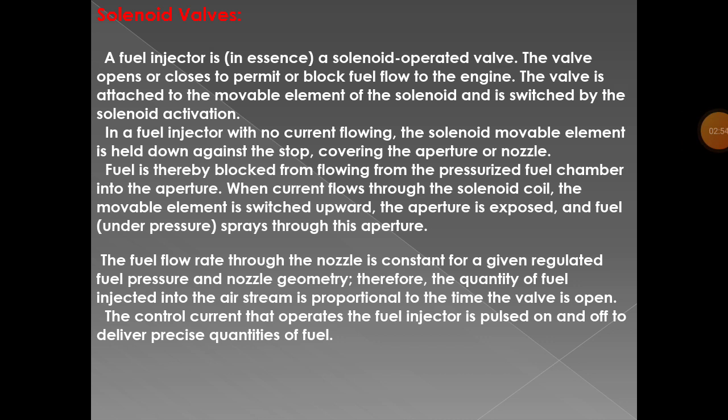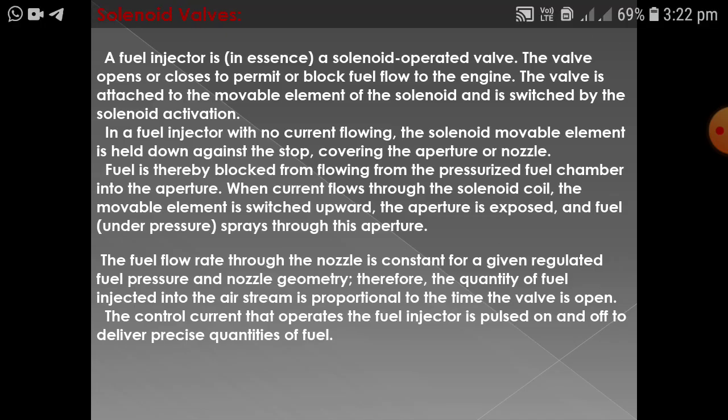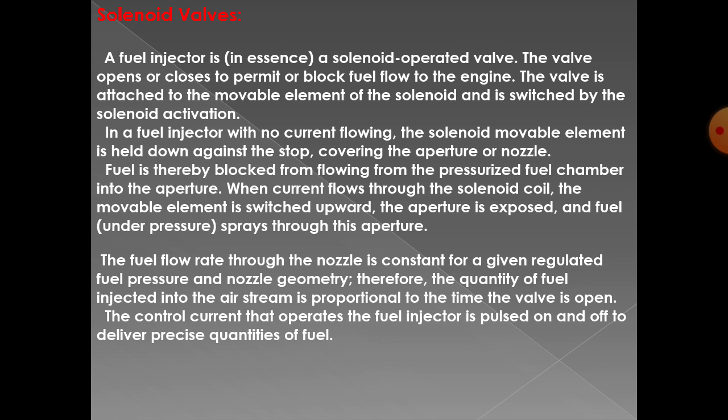The first actuator is solenoid valves. The fuel injector is a solenoid-operated valve. The valve opens or closes to permit or block fuel flow to the engine. The valve is attached to the movable element of the solenoid and is switched by solenoid activation. In a fuel injector with no current flowing, the solenoid movable element is held down against the top, covering the aperture or nozzle. Fuel is thereby blocked from flowing from the pressurized fuel chamber into the aperture. When current flows through the solenoid coil, the movable element is switched upward, the aperture is exposed, and fuel sprays through the aperture.